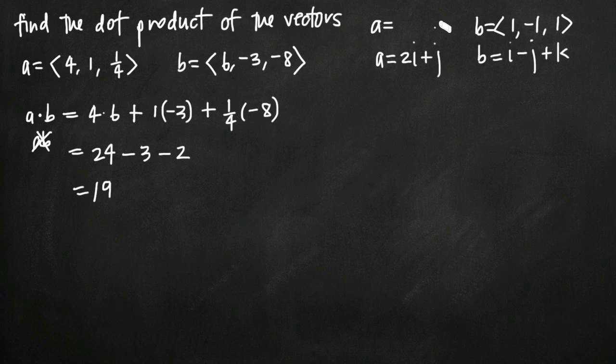For a, we can say a is equal to, same thing, 2 comma 1, because the coefficient is 2 on i, the coefficient is 1 on j. There's no k value, so essentially here we have plus 0k, which means the coefficient on k is 0. So that's how you can think about it.